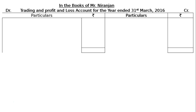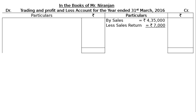On the credit side: sales Rs 4,35,000 less sales return Rs 7,000, giving a net figure of Rs 4,28,000 in the final column. Closing stock, given in the adjustment as Rs 75,000, being an adjustment item will be shown twice — once on the credit side of the trading account and again as a current asset in the balance sheet.